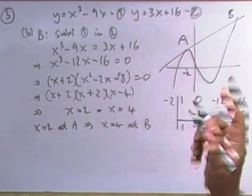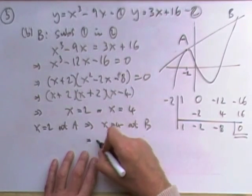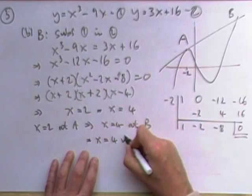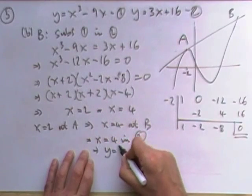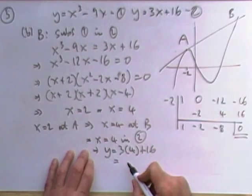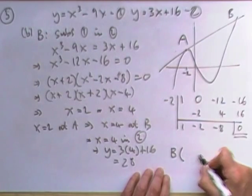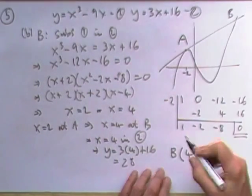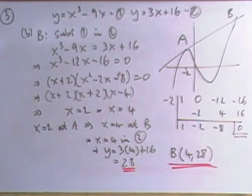And this is the case of what's the Y coordinate. So I'm going to substitute it back in. So X equals four in equation two gives me Y is three times four plus 16. So I've got the 12, 12 and 16, that's going to be 28. Finish it off. B is the point 4, 28. And that's question five.